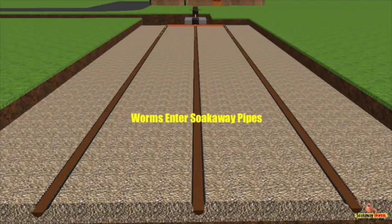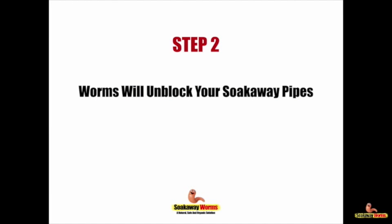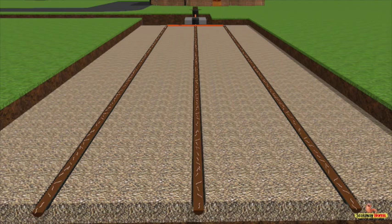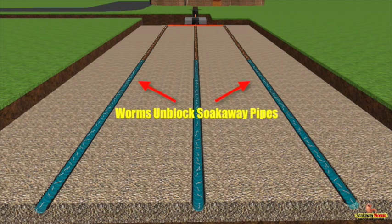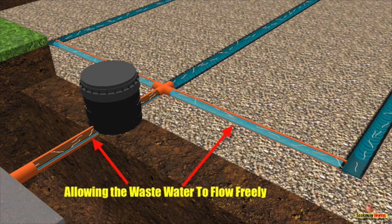In time, as the worms continue to breed, multiply and burrow through that sludge, they'll eventually penetrate your entire soak away system and unblock it. Once the worms are in the soak away pipes, they really start to work their magic. Very quickly, these worms will start to eat that sludge, unblocking and clearing the soak away pipes, allowing wastewater to flow freely once more — working their way back through the sludge, eating it and clearing it all the way back to the septic tank.